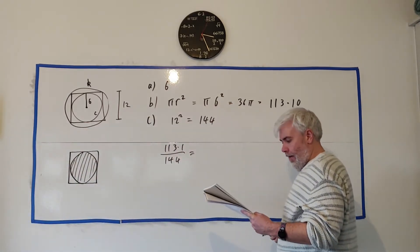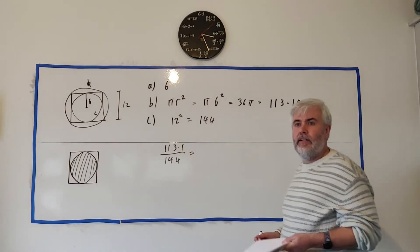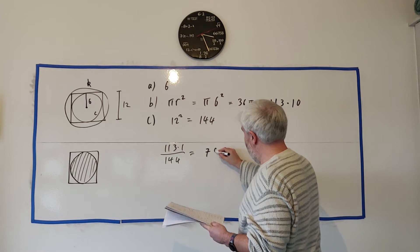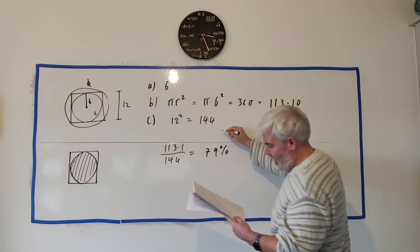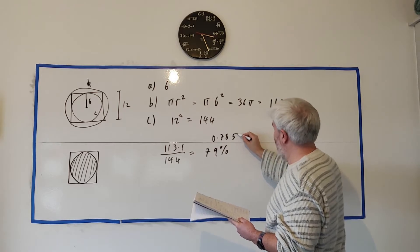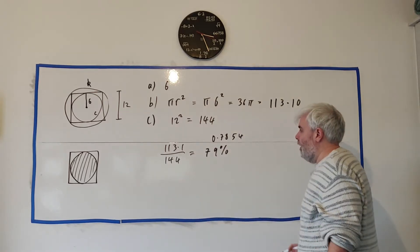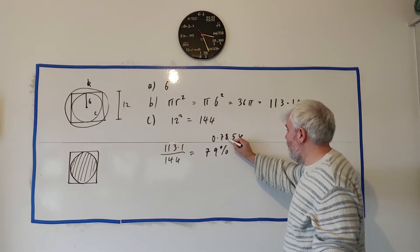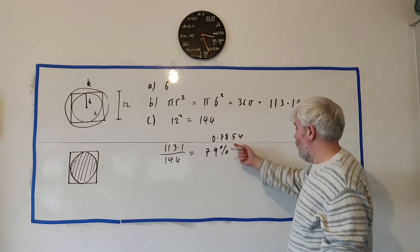Rounded to the nearest percentage is equal to 79%. What you get in the calculator would be 0.7854 something, so the nearest percentage, that's 79.